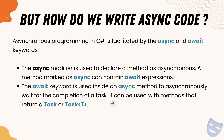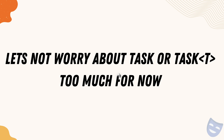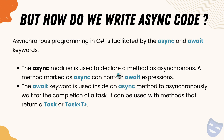But how do we write async code? Asynchronous programming in C# is facilitated by the async and await keywords. The async modifier is used to declare a method as asynchronous, and a method marked with async can contain an await expression. The await keyword is used inside an async method to asynchronously wait for the completion of a task, and it can be used with methods that return a Task or Task<T>. For now, async and await are the keywords used in combination to perform asynchronous operations.